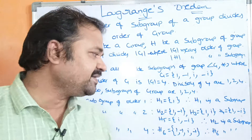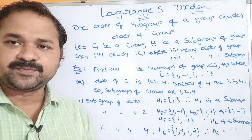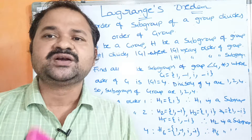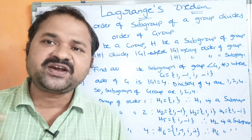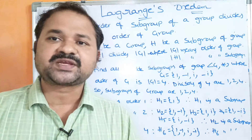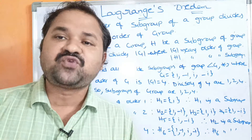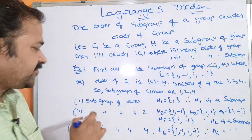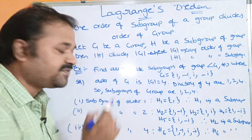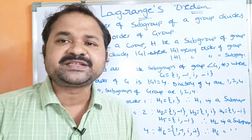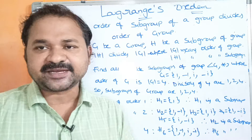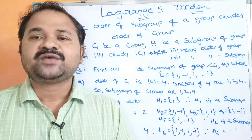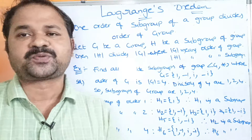We need to find subgroups of order 1, subgroups of order 2, and subgroups of order 4, because the group contains 4 elements. Order 1 means the subgroup contains only one element, taken from {1, -1, i, -i}.